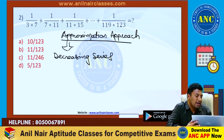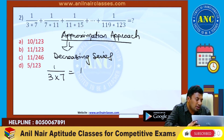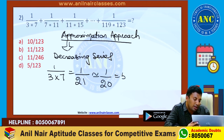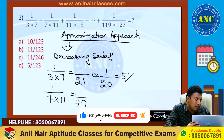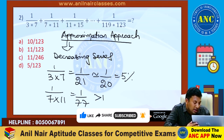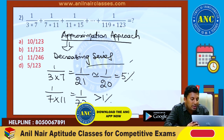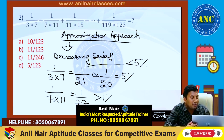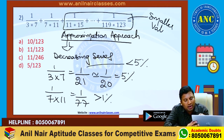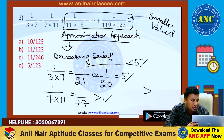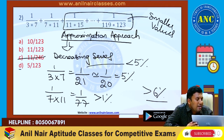If the series is a decreasing series, the first option 1/(3×7) is nothing but 1/21. 1/21 is closer to 1/20. 1/20 is nothing but 5%. 1/21 is less than 5%. 1/165 — all these values are smaller values. That means, observing closer to 5%, the answer should be just greater than 6%.